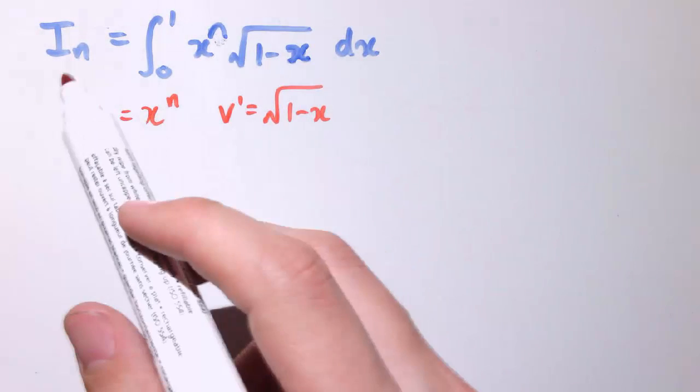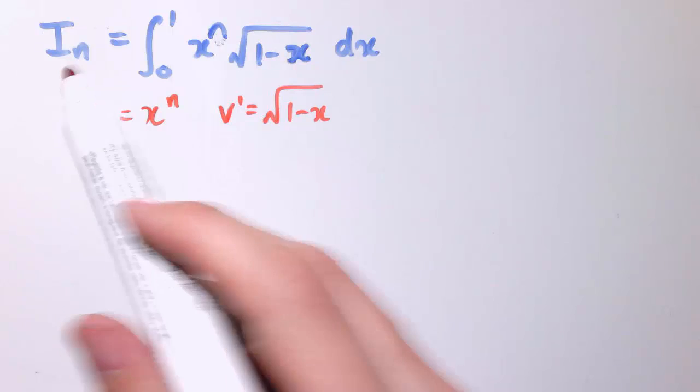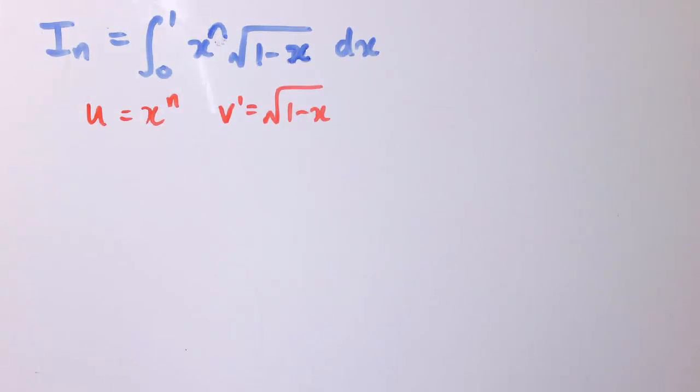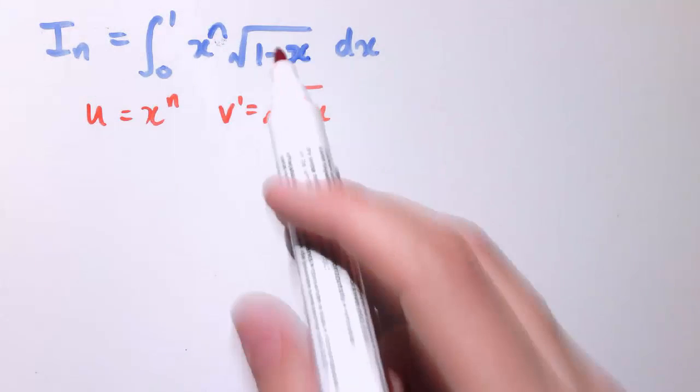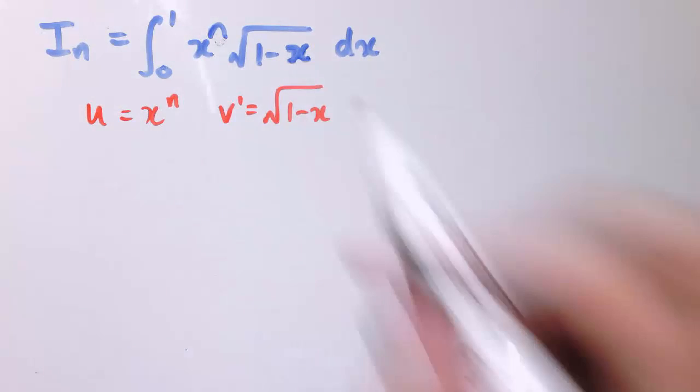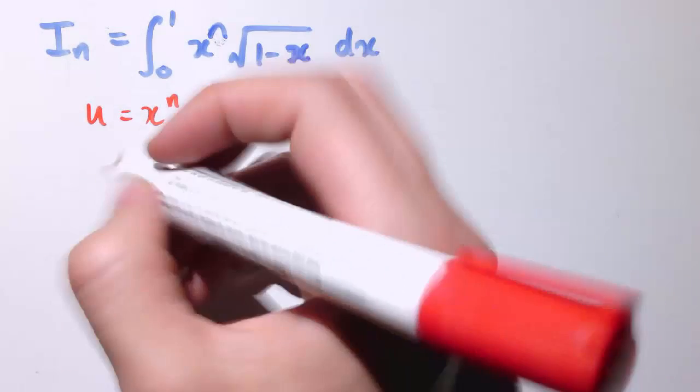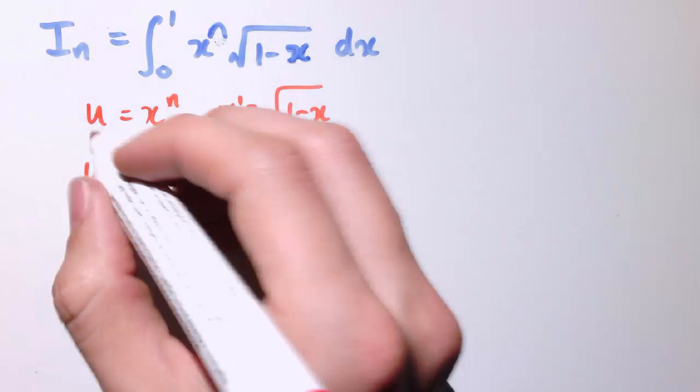So you could go the other way and have n related to n plus 1, but it's fine here. We can integrate this function, root 1 minus x, easily enough. So let's proceed in this way.